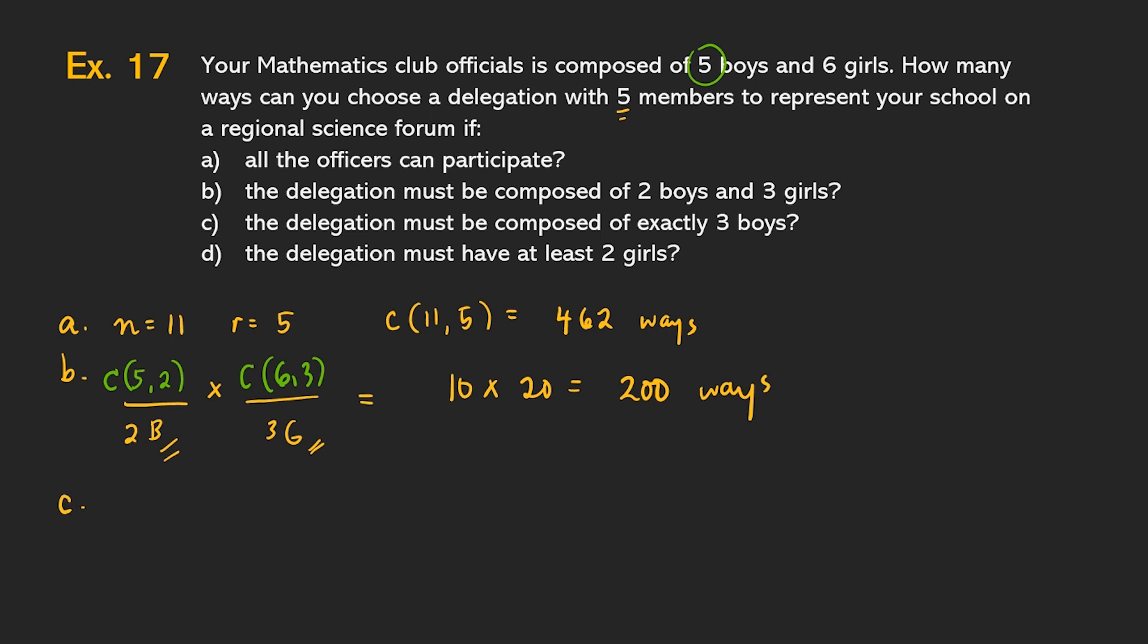Let's have letter C. The delegation must be composed of exactly three boys. Exactly three boys. So, again, mukhang dalawang operations na naman yung gagawin natin, no? Exactly three boys, ibig sabihin, we are left with two girls na lang. So, the three boys can be selected from five, which can be done in five combination three. And then, the remaining two girls, wala tayo choice. Kundi, syempre, kung tatlo yung boys doon, yung dalawang natitira sa girls natin sila pipiliin. Which can be done in six combination two ways.